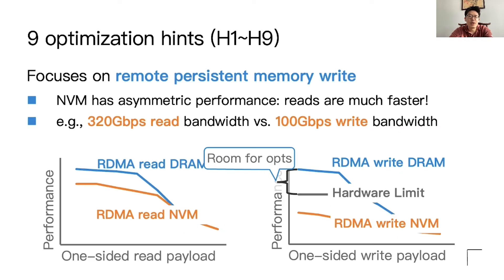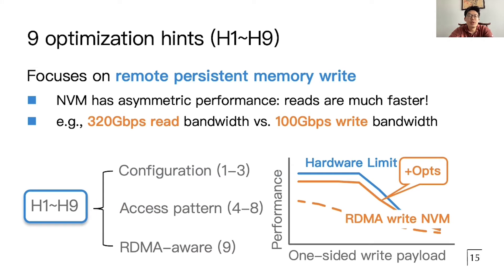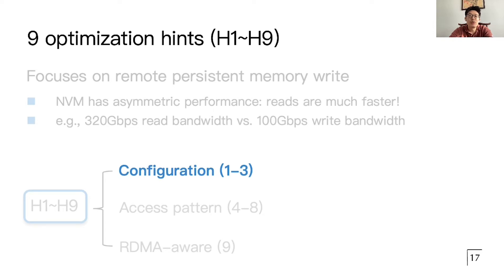The core of our study is nine optimization hints, and the focus of these hints is on the remote processor's write. As we can see, reading NVM with RDMA has close performance to DRAM because NVM has asymmetric read-write performance characteristics. On the other hand, writes are not, and we know there is room for improvement because the performance is still far from the hardware limit of RDMA or NVM, as shown in the figure. For the nine optimization hints, we characterize them into three categories: configuration-related optimizations, access pattern-related hints, and RDMA-aware hints. After applying all these optimizations, RDMA write-NVM performance can improve to near the hardware limit.